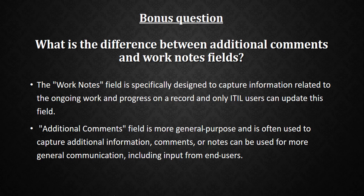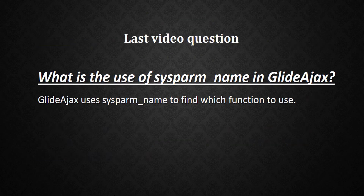Additional Comments is more general purpose and is often used to capture additional information, comments, or notes for general communication, including input from end users — any user can update it. If you need input from a caller or requester, you use Additional Comments, which is visible to every user including the requester. So the main difference is: Work Notes is for internal purposes and Additional Comments is for external communication.